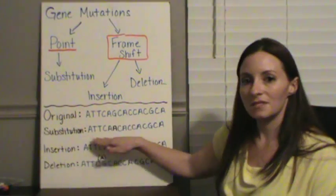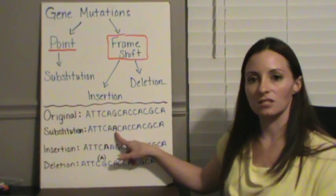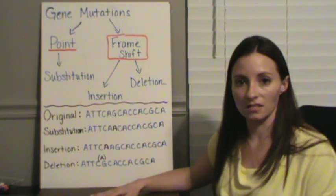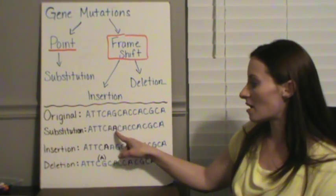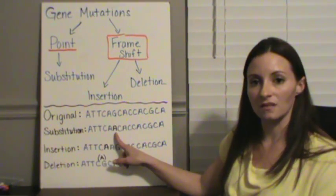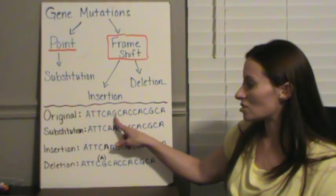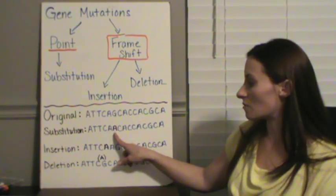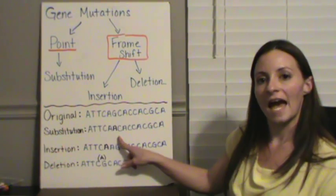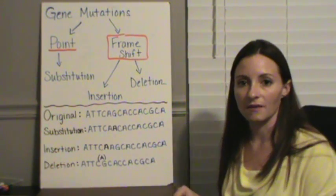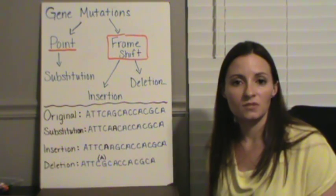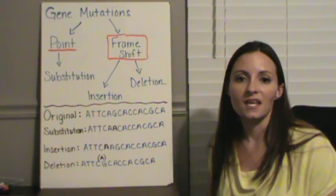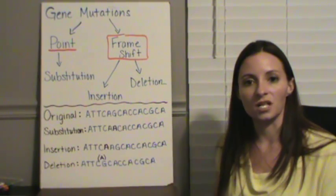When we make a substitution, and I've done the mutations in a different color so you can see what we have, you'll notice that all these letters are the same up until we reach the point of the substitution. Now we changed the G and substituted it with an A, and everything after that point is also the same. Point mutations are sometimes some of the simplest mutations, and they sometimes have no effect at all within our bodies.